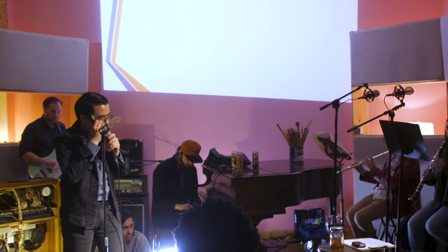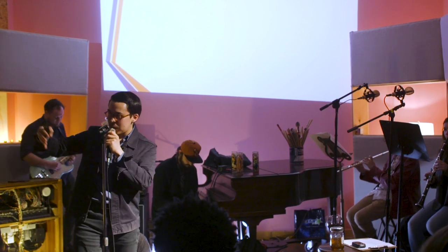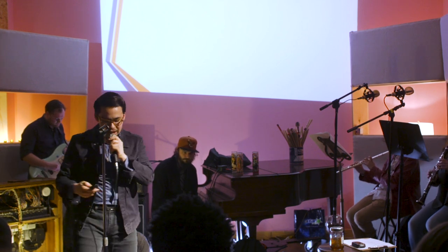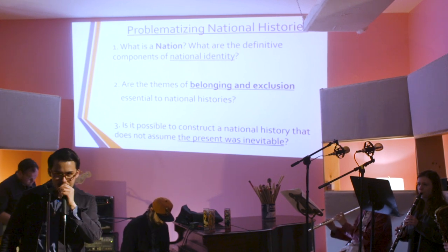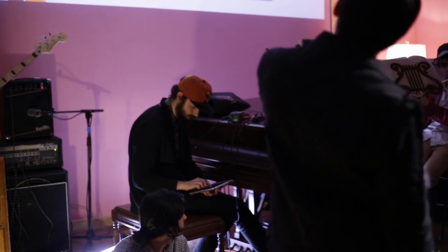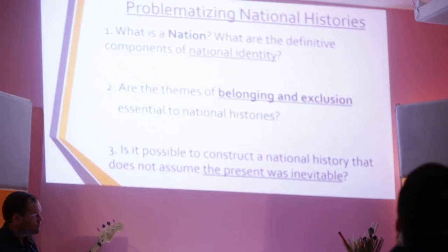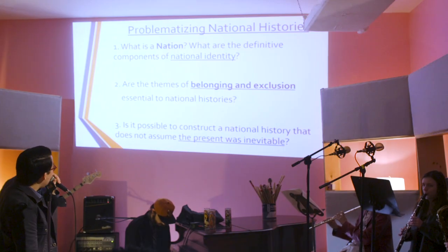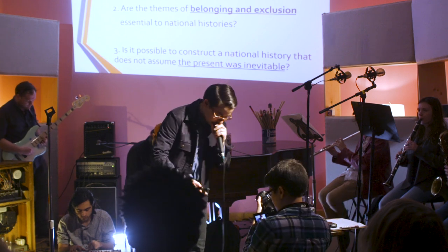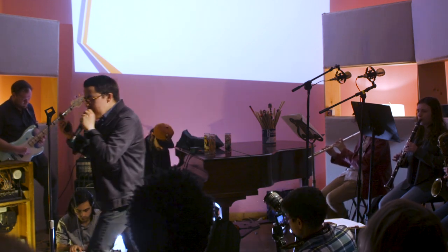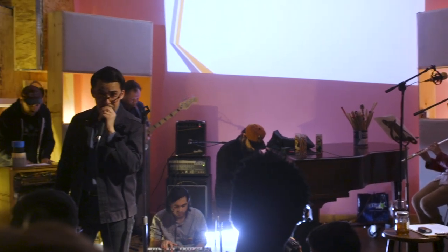Let's break this into three parts and problematize national histories. There are three central problems with the format of the national history survey. First: What is the nation? Second: What are the definitive components of national identity? Third: Are themes of belonging and exclusion essential to national histories? And is it possible to construct a national history that does not assume the present was inevitable? If you're going to have a national history course, you have to know what the nation is and begin from a definition of it — otherwise, what are you telling the history of?